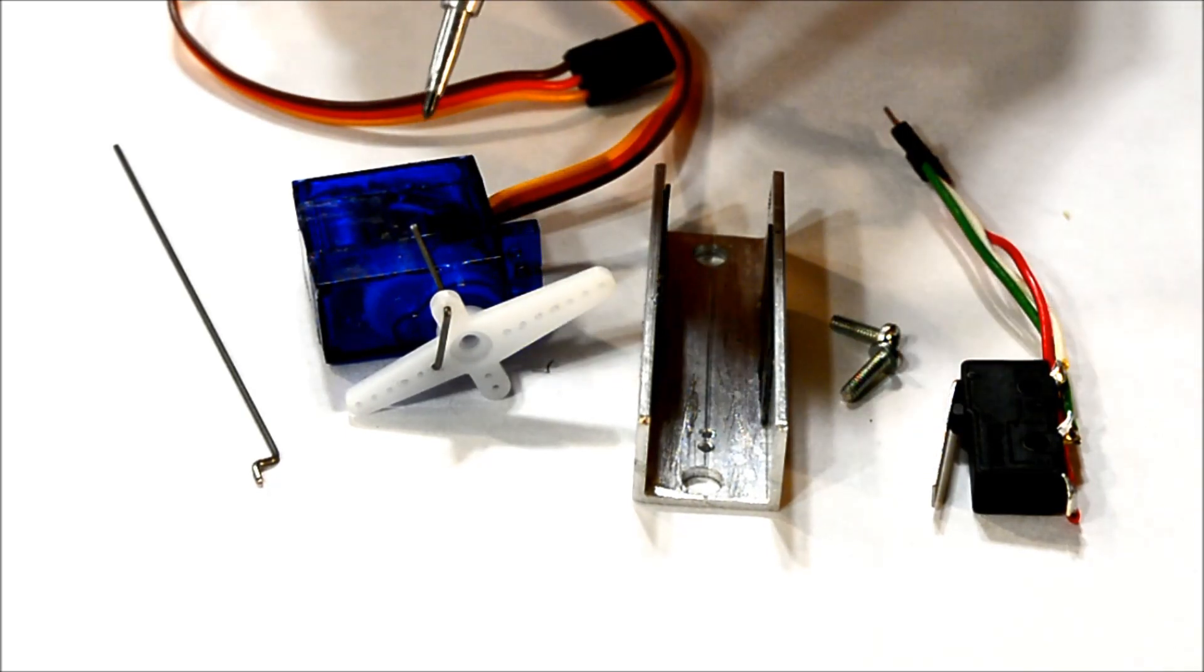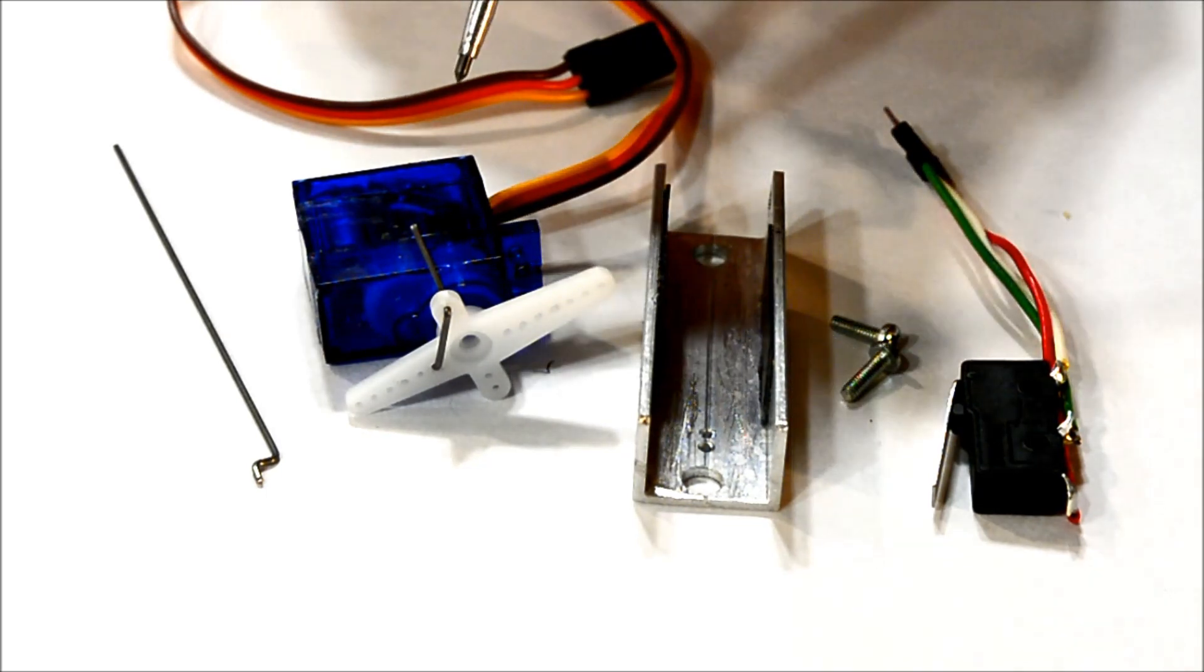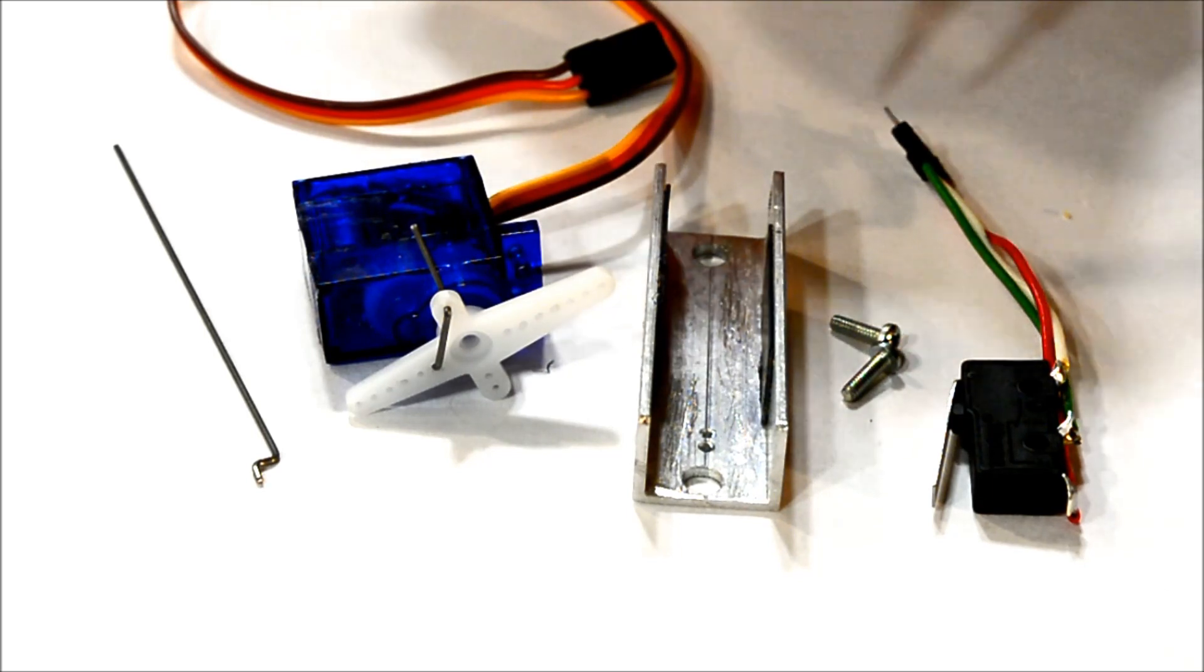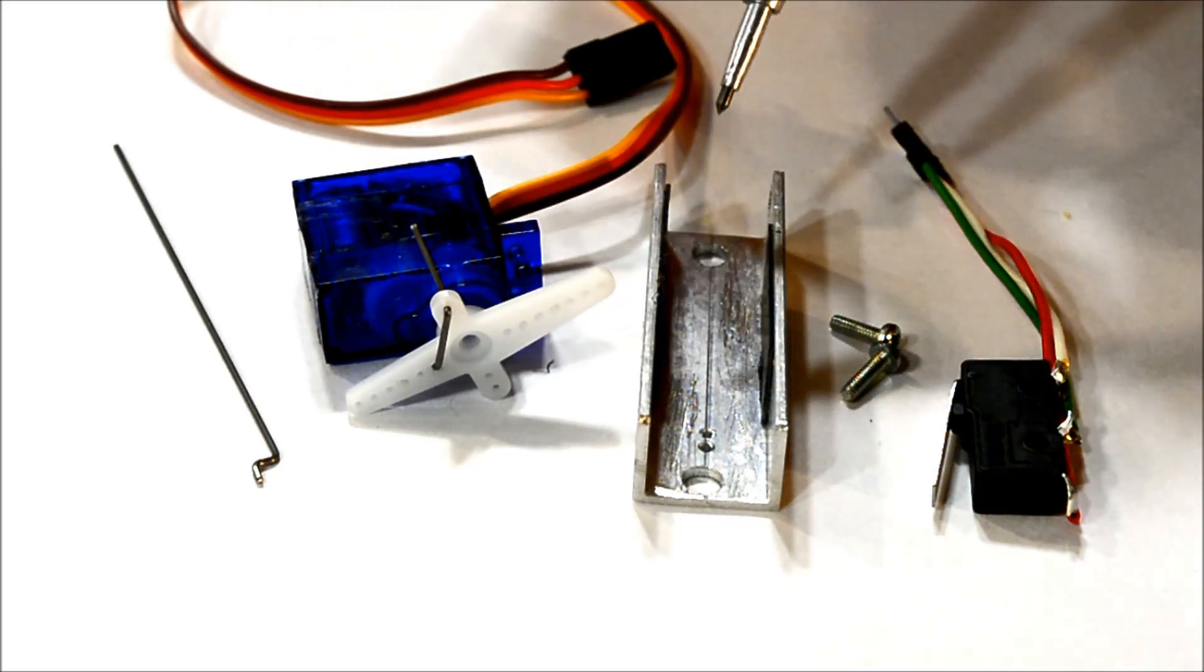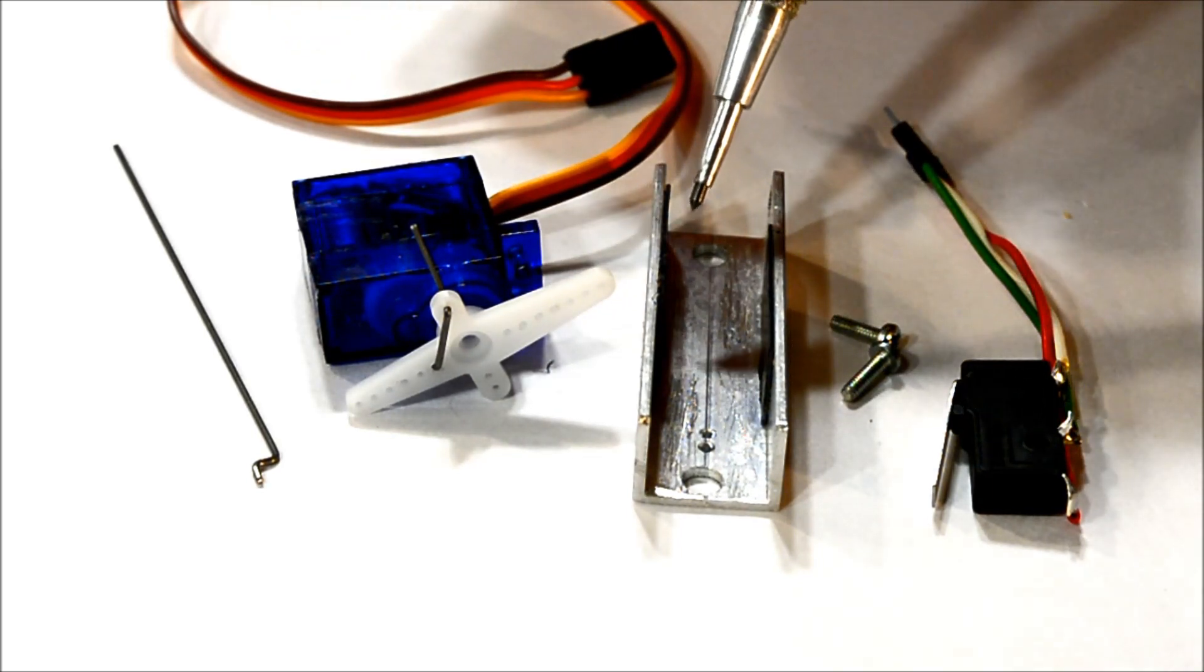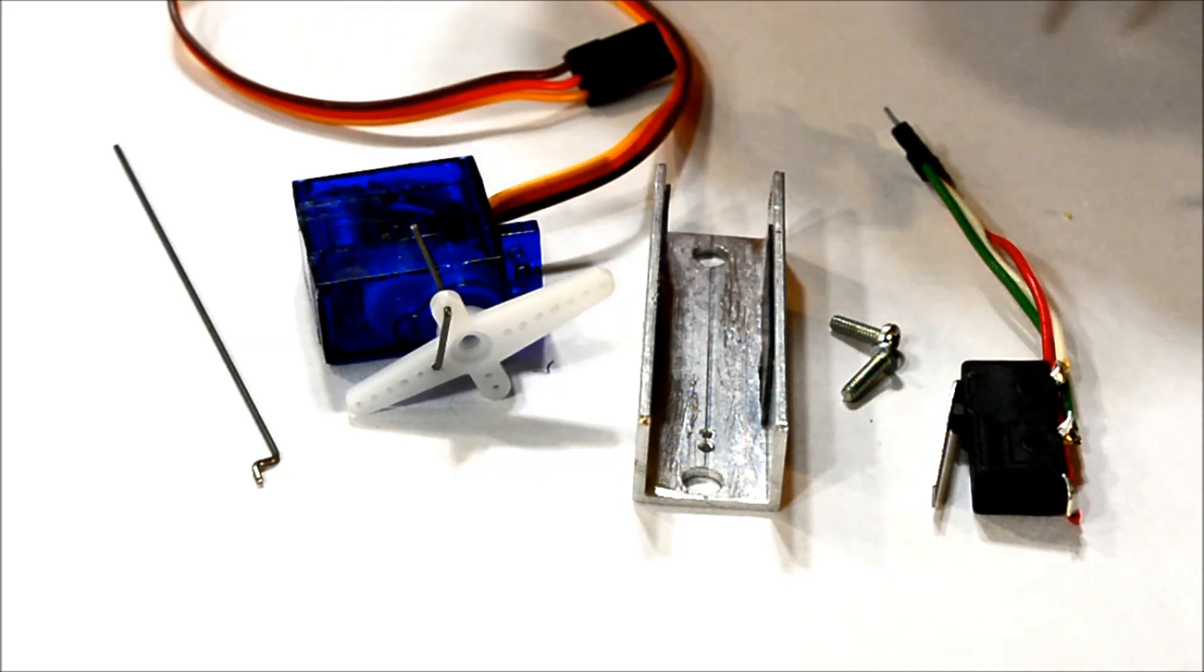Now these particular servos I got off of eBay, these SG90 servos, are just a tad narrow for the channel, so it doesn't hold quite tight. So I've got some scrap styrene that I've used to shim out the channel to get a nice press fit, because that's what's going to be holding the servo in.